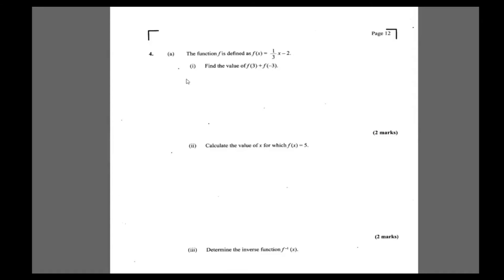Question 4 says the function is defined as f(x) = 1 over (3x - 2). Find the value of f(3) + f(-3). So to work out f(3) + f(-3), we have f(3) + f(-3).